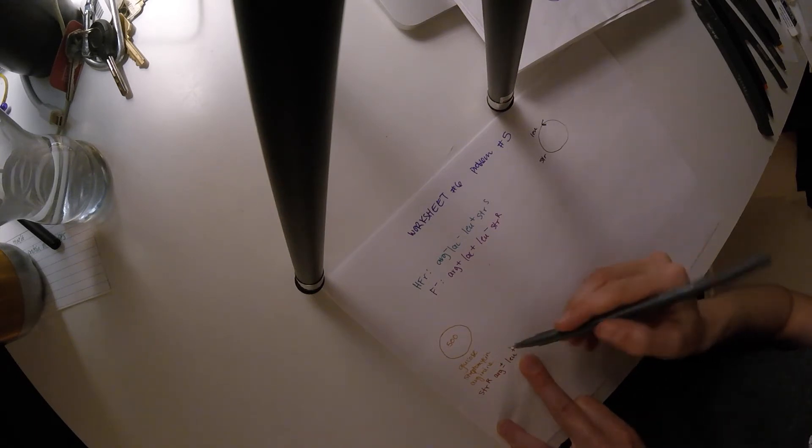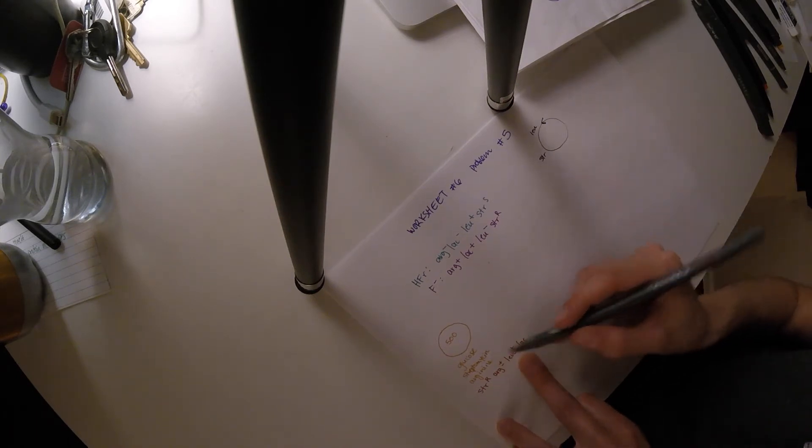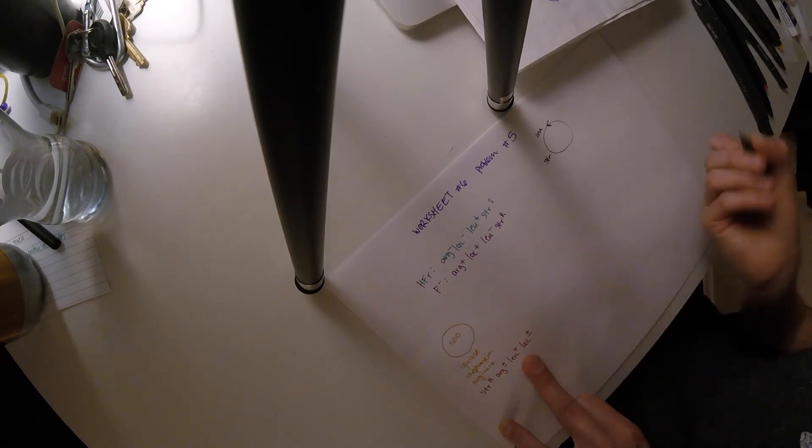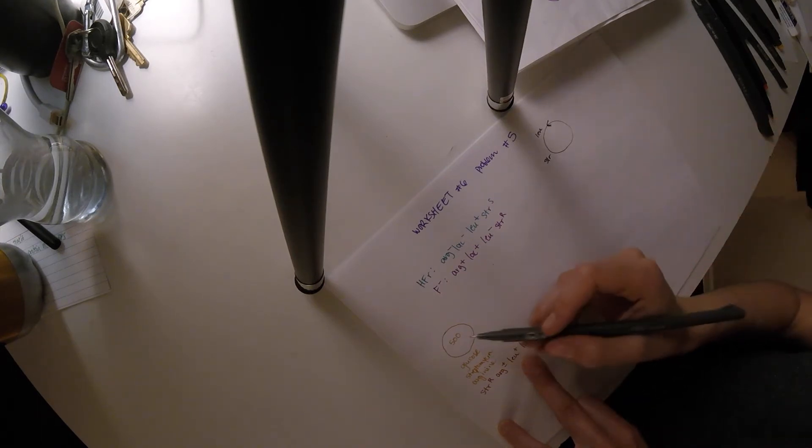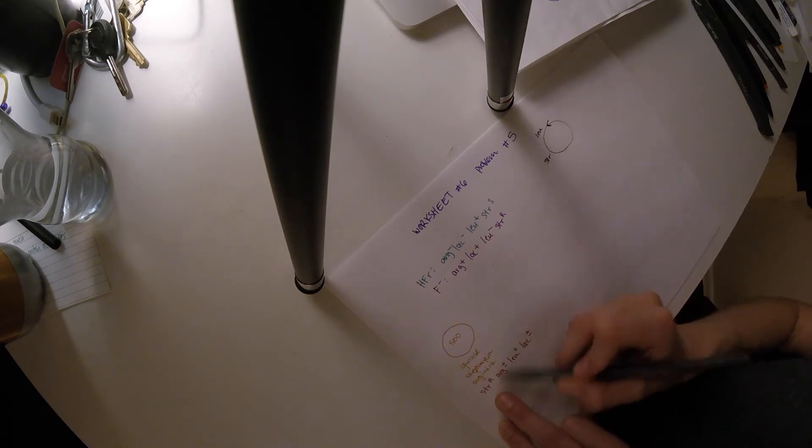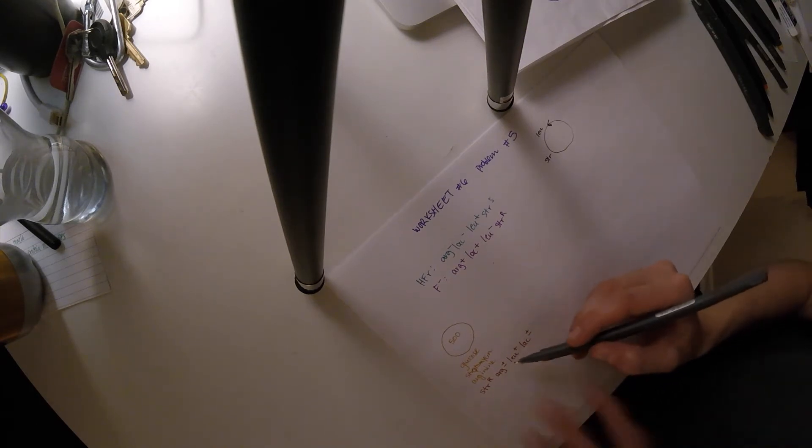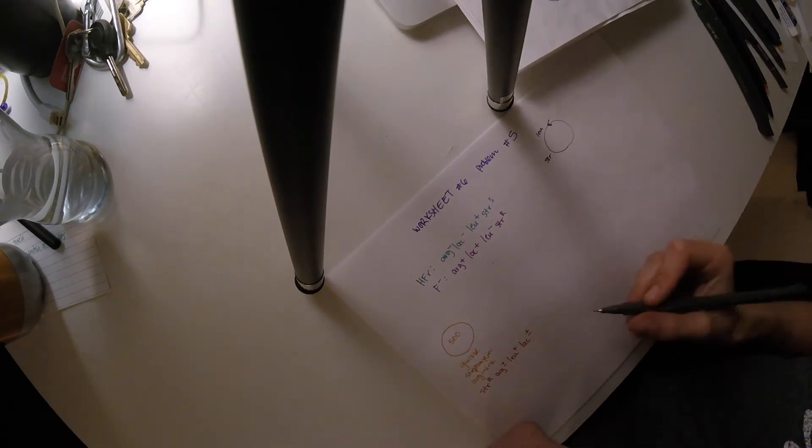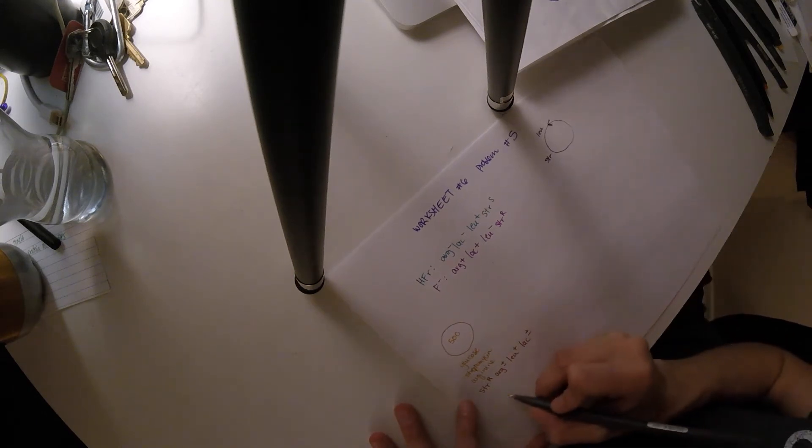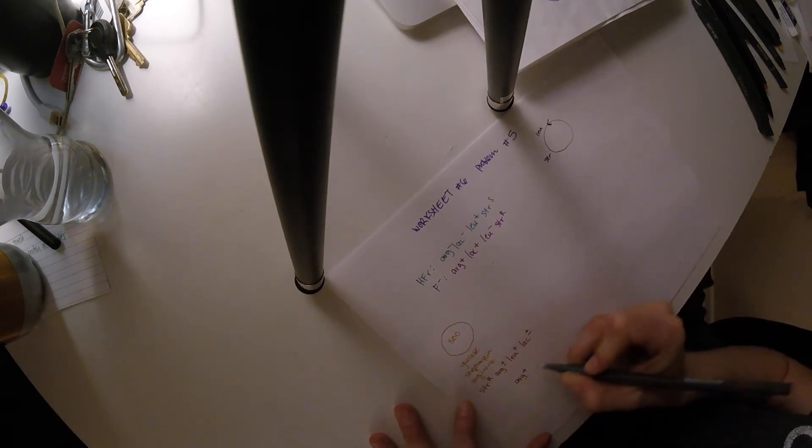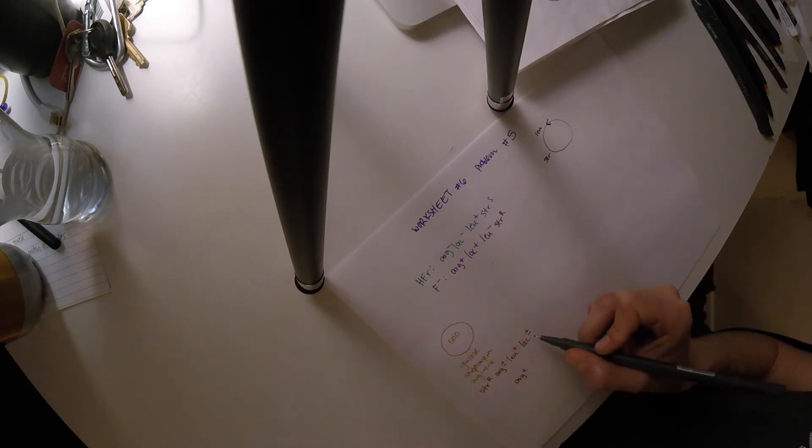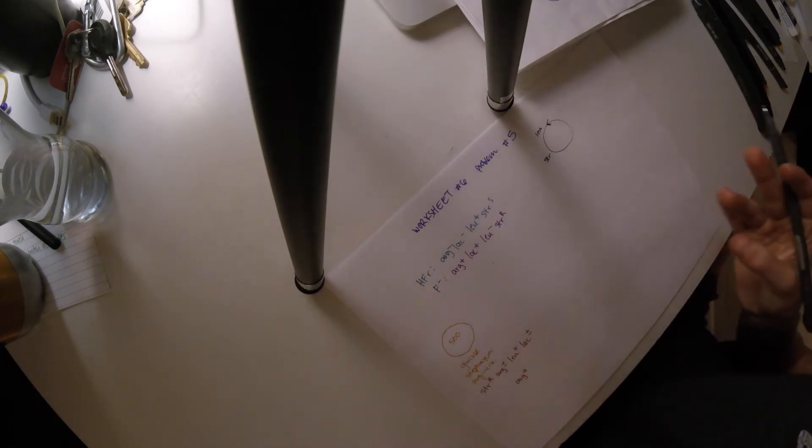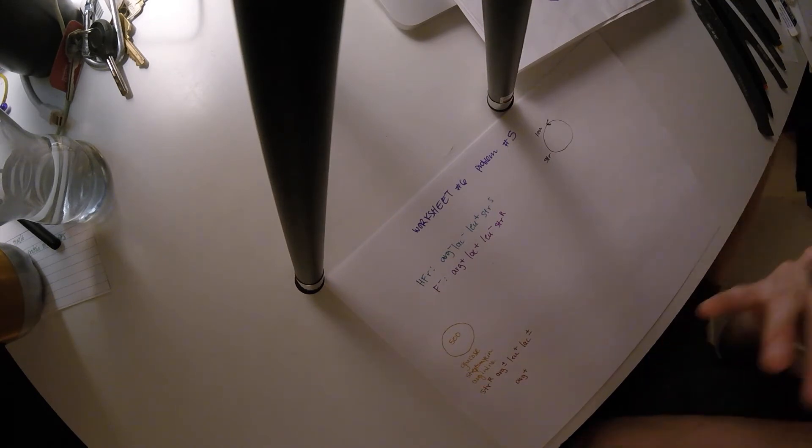And then in terms of Lac, we don't see anything about Lac, we only see glucose. So they could be plus or minus with regard to Lac as well. So what we know of these 500 colonies is that they're definitely resistant to STR, and they definitely have Lou plus. So now we're trying to figure out what are the genotypes in regards to the Arg plus minus and the Lac plus minus.